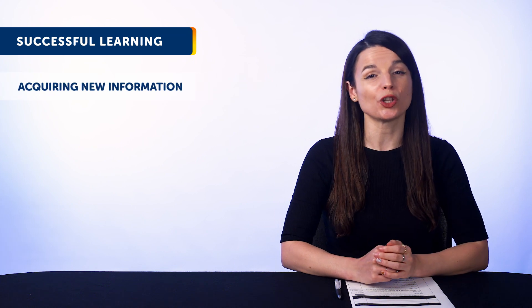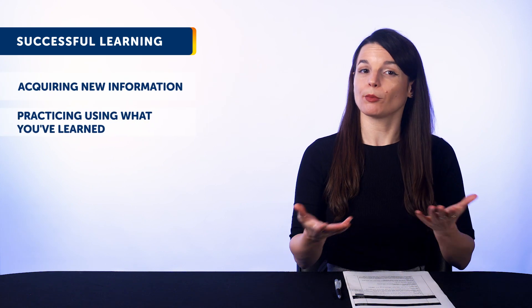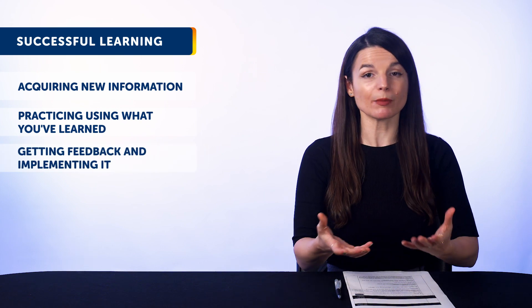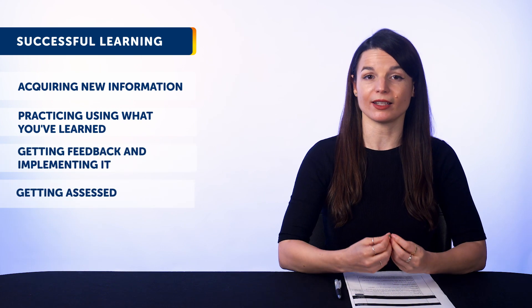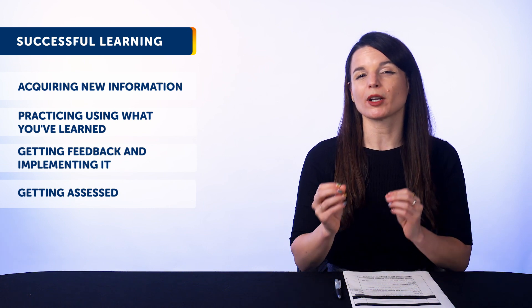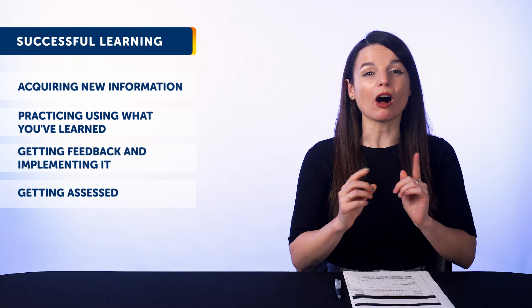How exactly? There's a simple formula to learning successfully. Successful learning requires 1) acquiring new information, 2) practicing using what you've learned, 3) getting feedback and implementing it, and then 4) getting assessed—someone telling you if you're on the right track or not. So if you want to learn fast, you'll want to do all of these things.